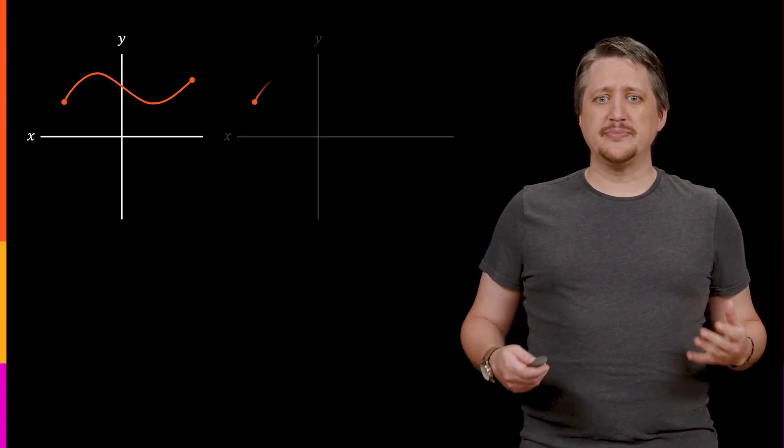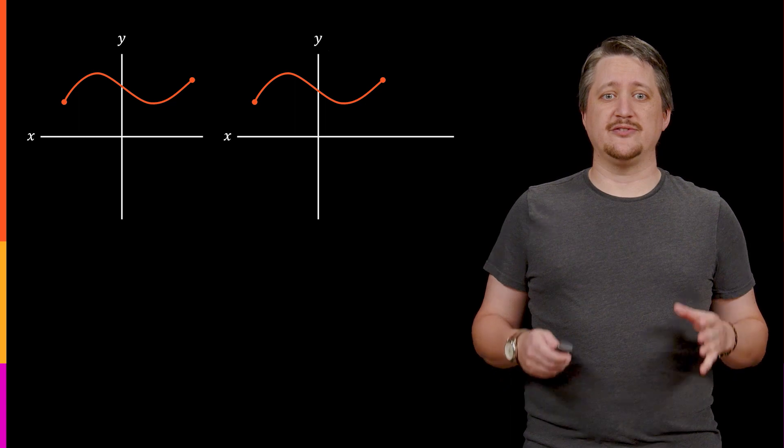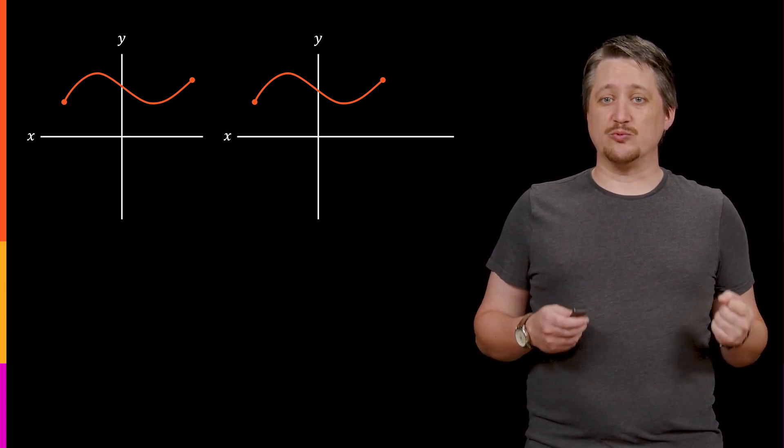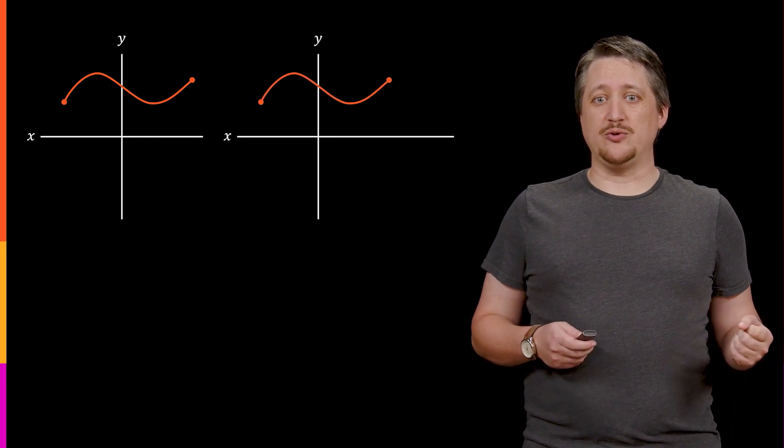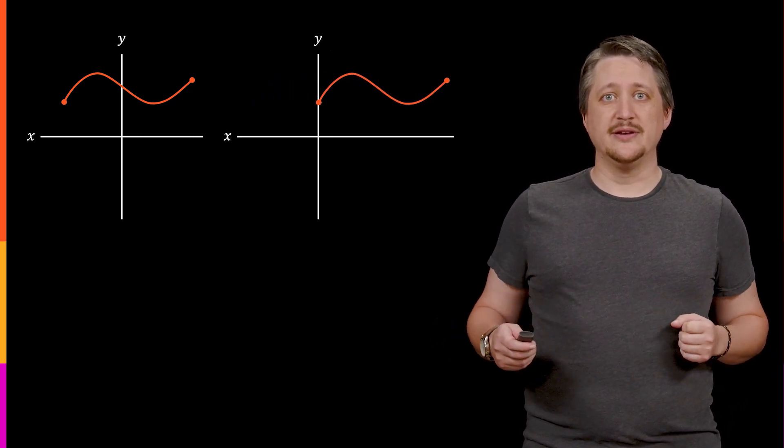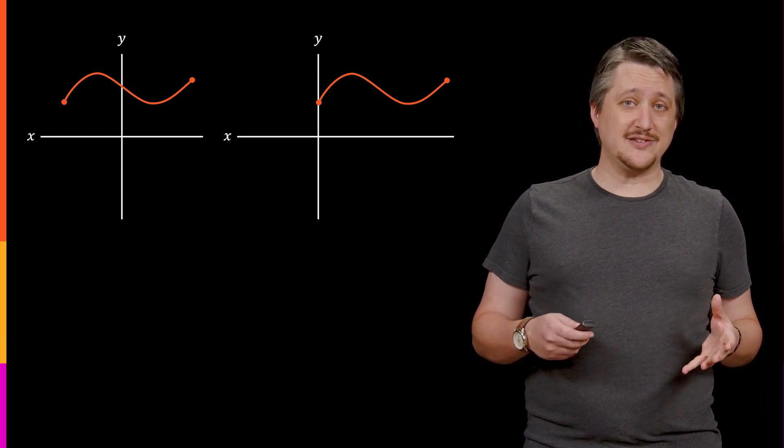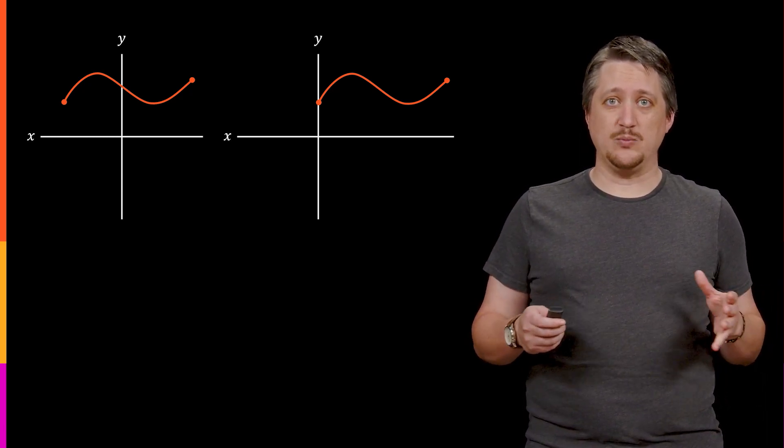So for example, if we wanted to go to the right, we start with where it is right now, and then we can translate it doing a rigid translation, and it would go to the right. This would be an example because it stays exactly the same shape, it just shifts the whole thing in one direction.